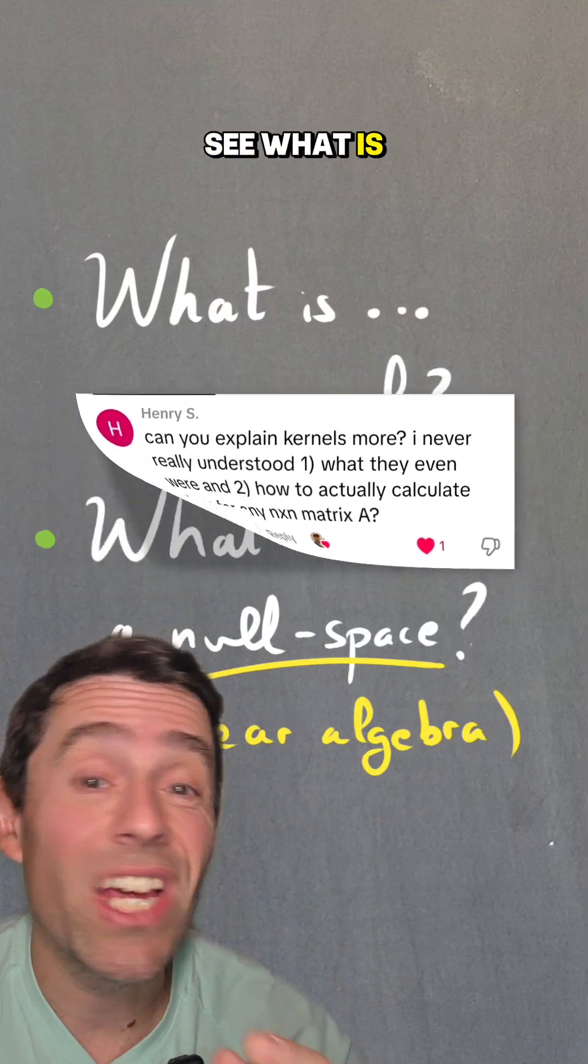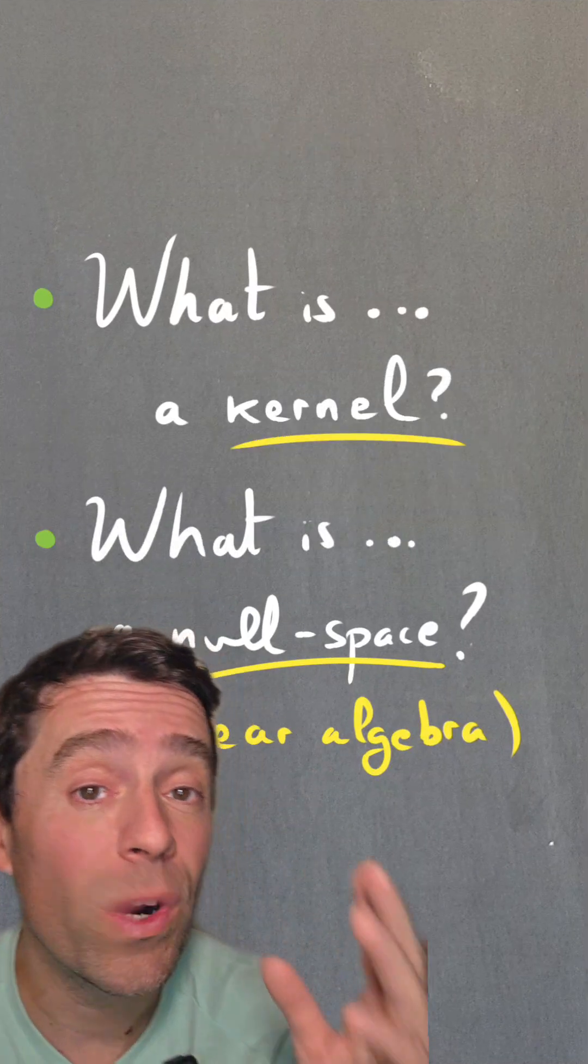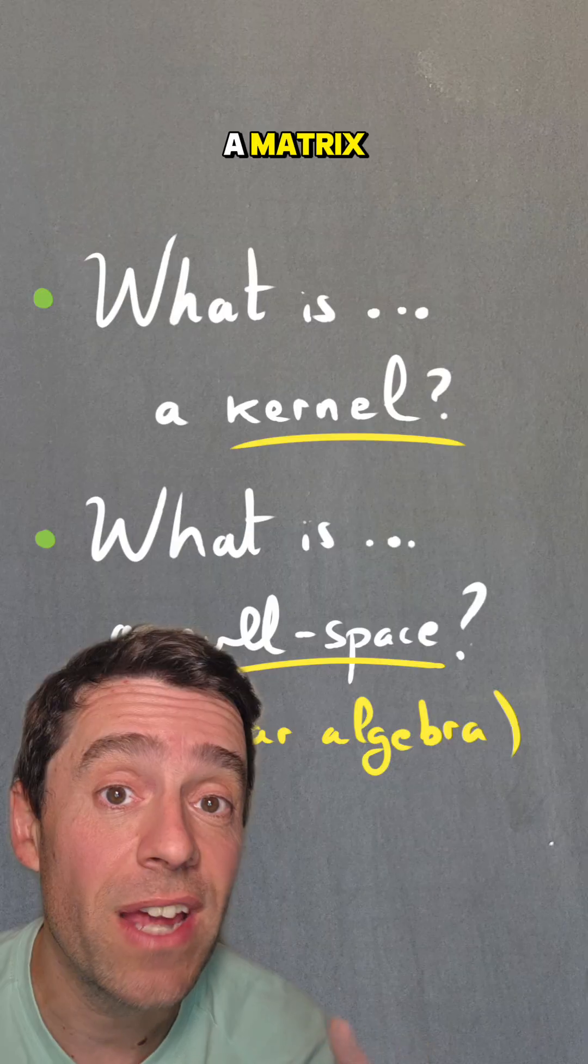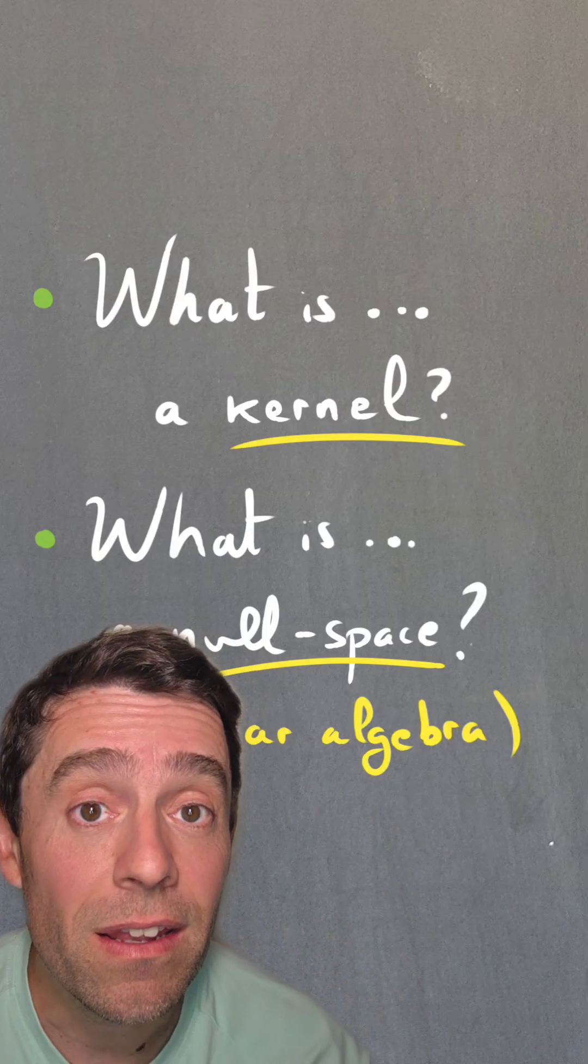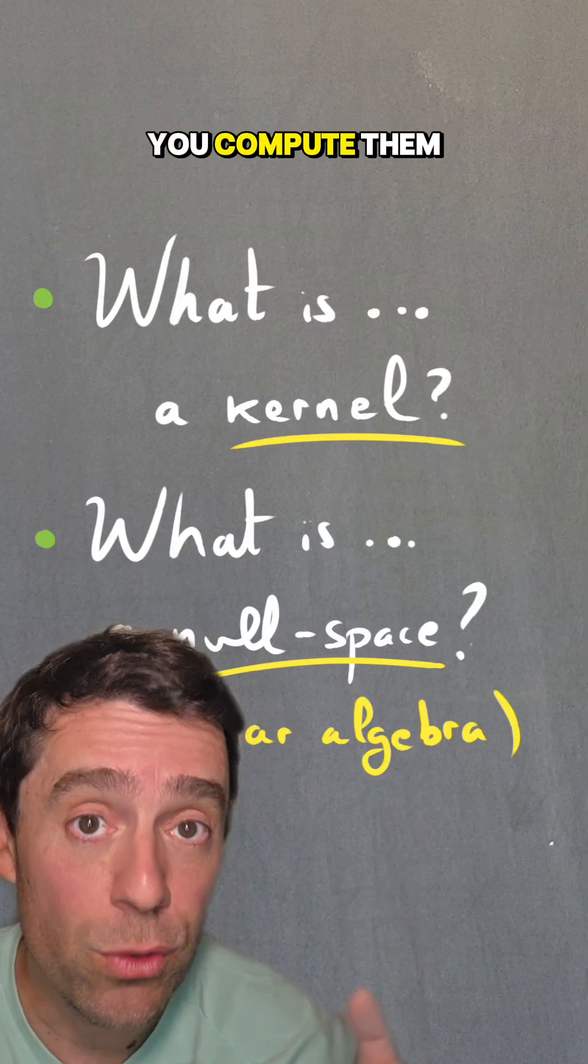By request, let's see what is the kernel of a linear map, what is the null space of a matrix, how are these two things related, and how do you compute them?